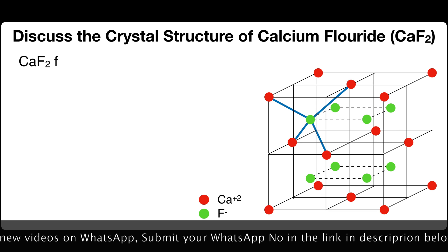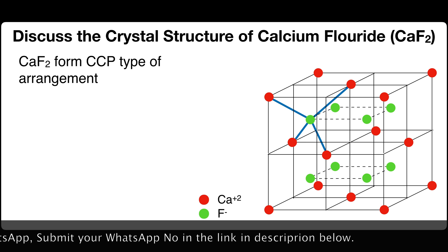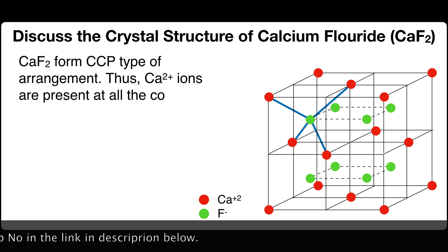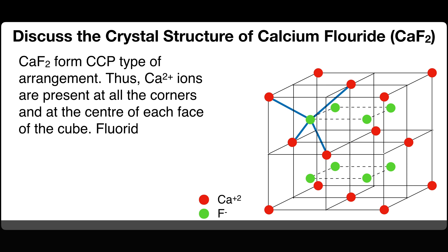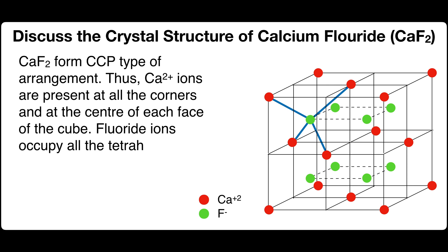Calcium fluoride forms CCP, closed cubic packing type of arrangement. Thus, calcium ions are present at all the corners and at the center of each face of the cube. Fluoride ions occupy all the tetrahedral sites.